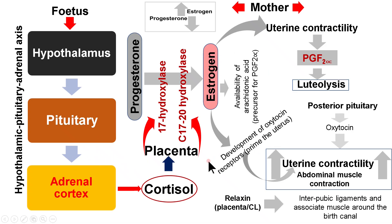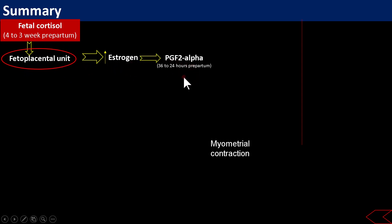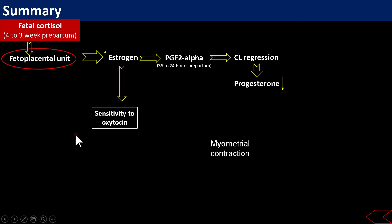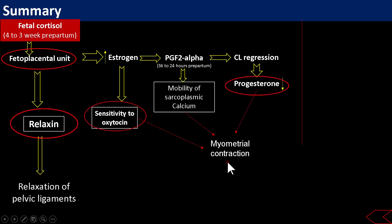To summarize the mechanism: fetal cortisol acts upon the fetoplacental unit, which produces estrogen. This causes PGF2α release from the uterus, which causes regression of the corpus luteum, significantly decreasing progesterone. Estrogen prepares the uterus for oxytocin. Prostaglandins also enhance uterine contractility by mobilizing sarcoplasmic calcium. Relaxin from the placenta and corpus luteum causes relaxation of the pelvic ligament, all increasing uterine contractility.